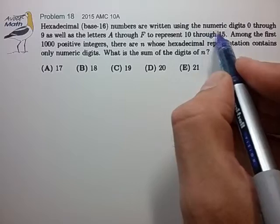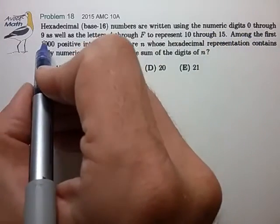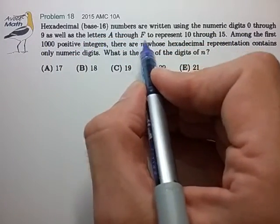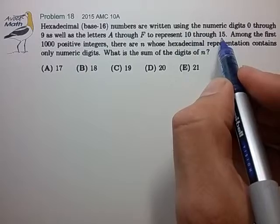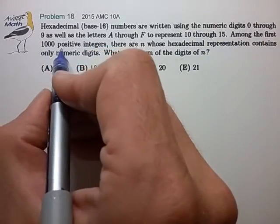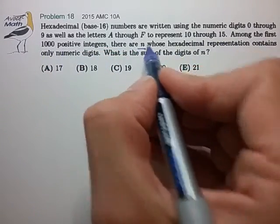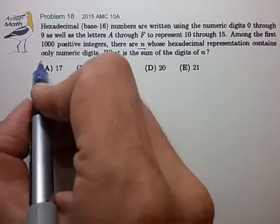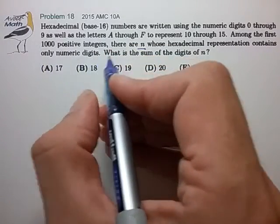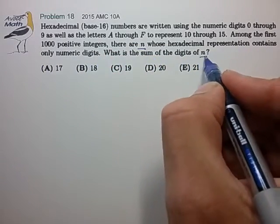Hexadecimal numbers are written using the numeric digits 0 through 9, as well as the letters A through F to represent 10 through 15. Among the first 1,000 positive integers, there are n whose hexadecimal representation contains only numeric digits. What is the sum of the digits of n?